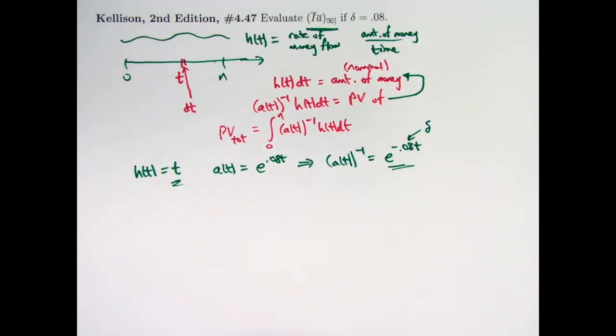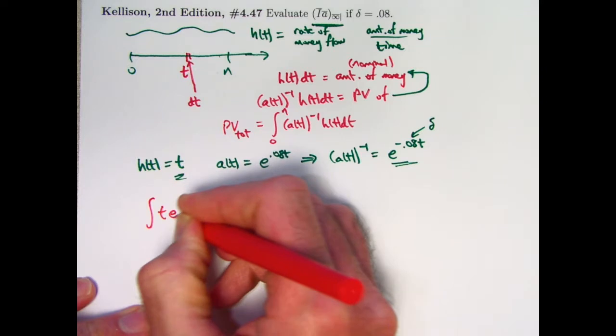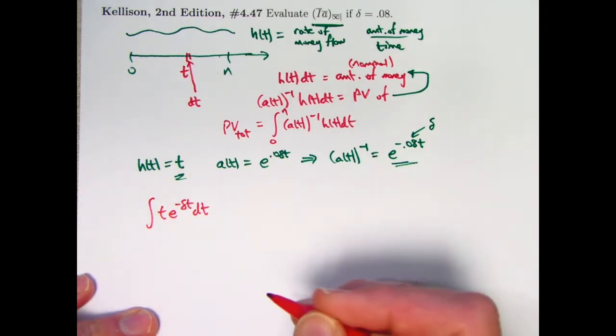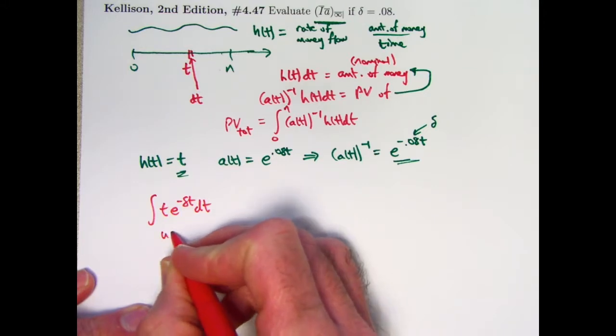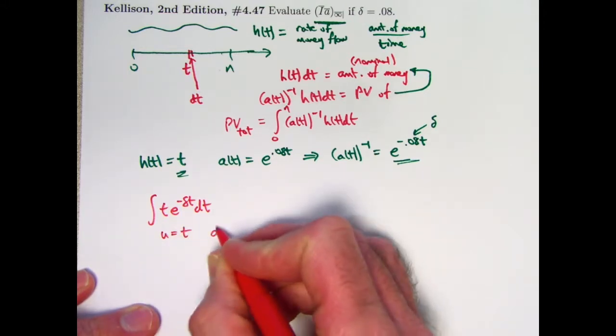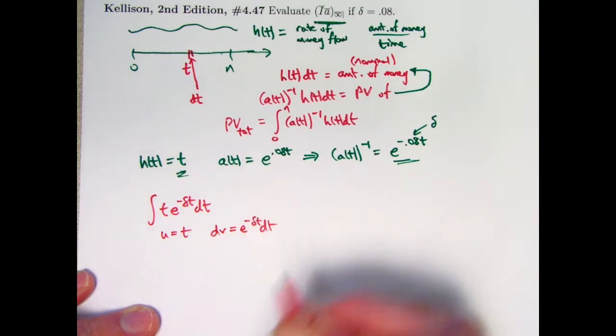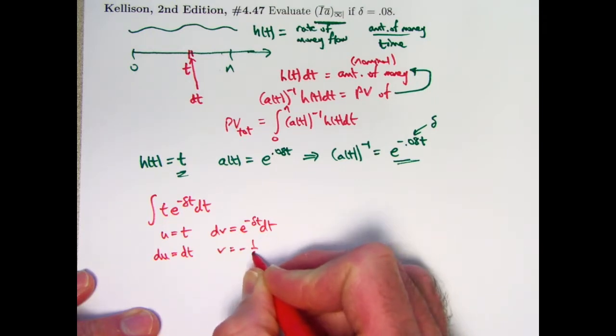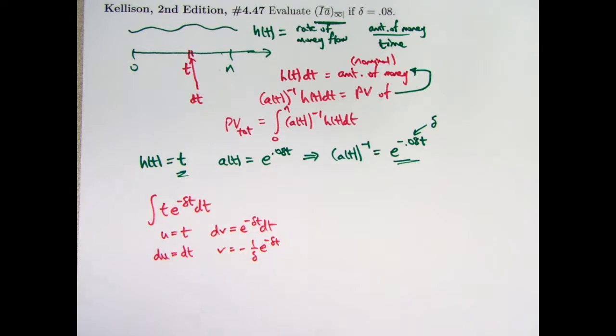You might recall that in integrating something like that, t e to the negative delta t in this case, that you need to use integration by parts. Let's go ahead and just do an indefinite integral first. Using integration by parts, we can let u equal t, and dv be e to the negative delta t dt. du will be dt, and v will be negative 1 over delta e to the negative delta t.